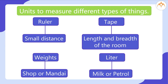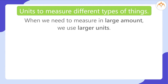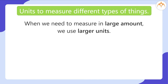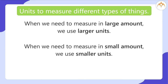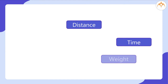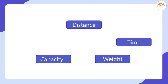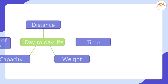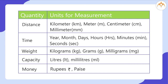For measuring the same thing, we have different units depending upon the quantity. When we need to measure a large amount, we use larger units; when we need to measure a small amount, we use smaller units. We need to measure distance, time, weight, capacity, and amount of money in our day-to-day life. The tables show units for measurement of these quantities and the relationship between different units for the same quantity.